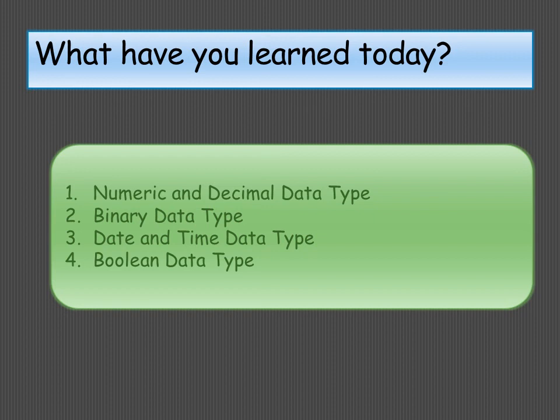Today we learned about different data types: numeric data types including integer, big integer, small integer, and tiny integer; decimal data type; binary data types including binary, VARBINARY, and long VARBINARY; date and time data types including date, time, and timestamp; and boolean data type, which can only have two values — yes or no, true or false, or on or off. Try to answer the practice question, and if you face any difficulty, call or send me a message. Thank you, have a nice day.